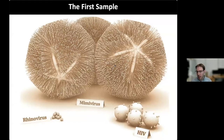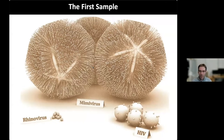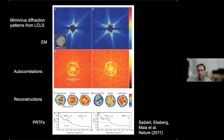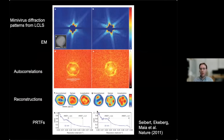The first experiments were done on quite large samples. They were done on the mimivirus, around 400–450 nanometers in diameter — extremely giant viruses. They gave beautiful diffraction at the LCLS, were reconstructed, and this all worked very well — surprisingly well, given that it was among the first experiments done on a real X-ray free electron laser.